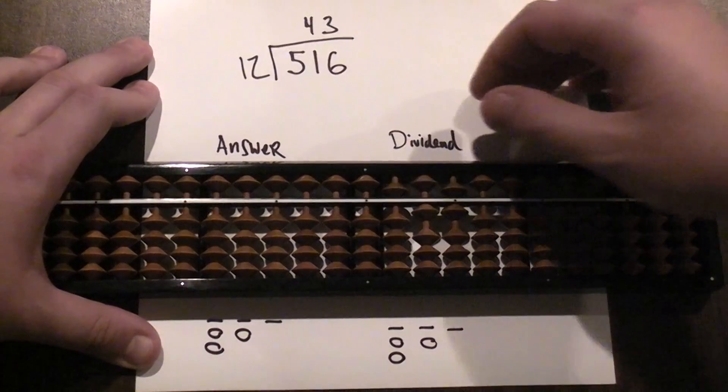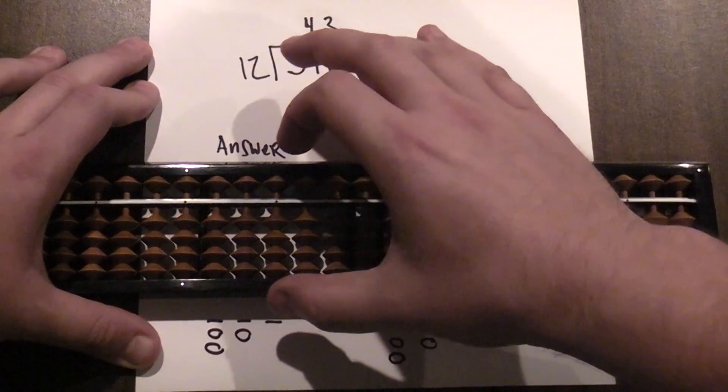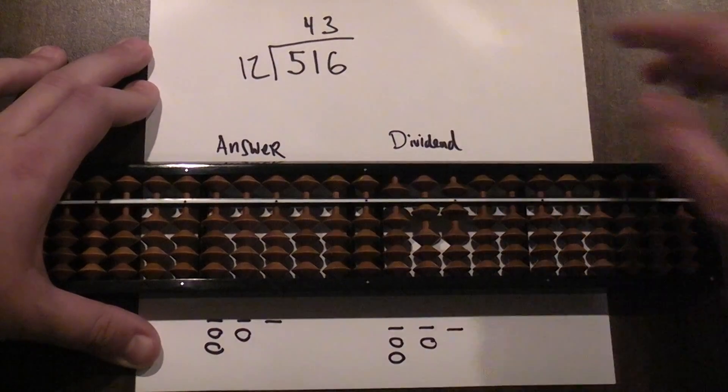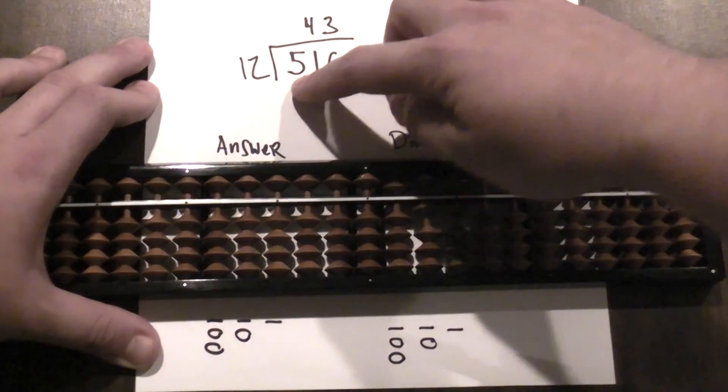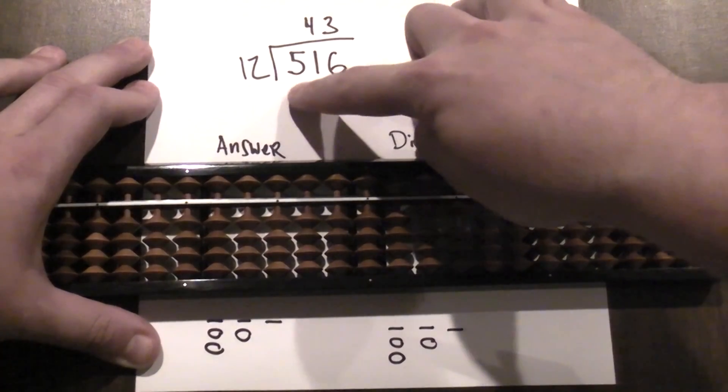So what that means is that as we're doing our calculation, I know where I can enter my answer in. I'm going to enter my answer in over here - this is going to be my ones column, this will be my tens column. So now how many times does 12 go into 5? It doesn't go in any times, so just like long division I'm going to go over to the next number.